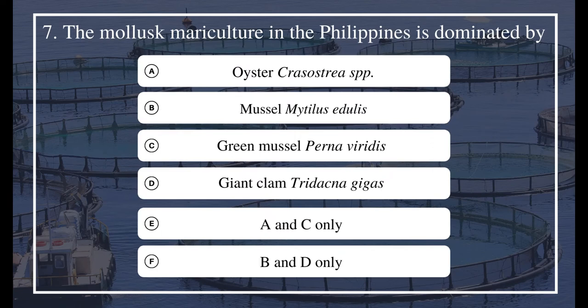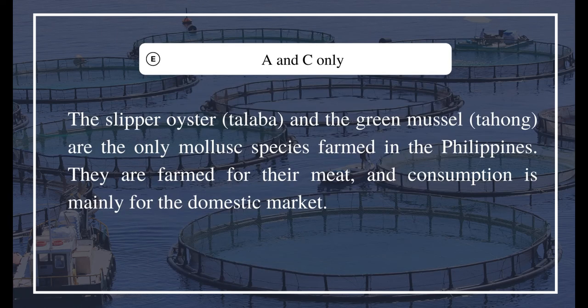Question 7: The mollusc mariculture in the Philippines is dominated by: a) Oyster Crassostrea species, b) Mussel Mytilus edulis, c) Green mussel Perna viridis, d) Giant clam Tridacna gigas, e) A and C only, f) B and D only. The answer is E, A and C only. The slipper oyster (talaba) and the green mussel (tahong) are the only mollusk species farmed in the Philippines. They are farmed for their meat and consumption is mainly for the domestic market.